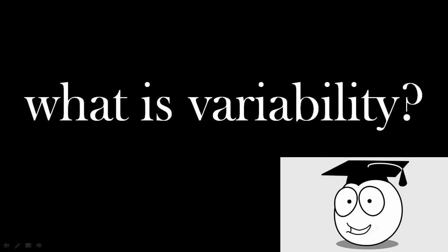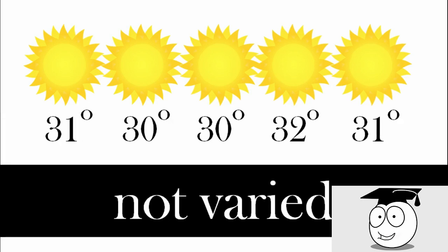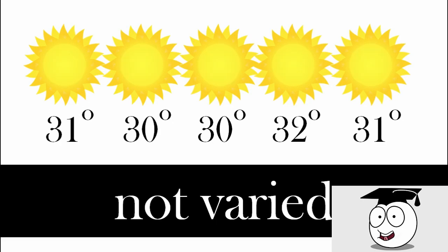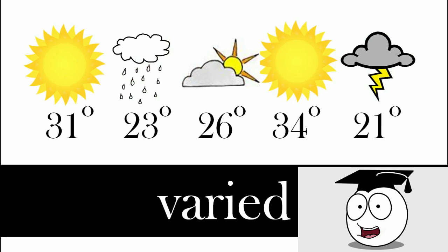What is variability? Here is the weather for five days. There's little change. Here we have five days of weather and it's very different. It's varied.